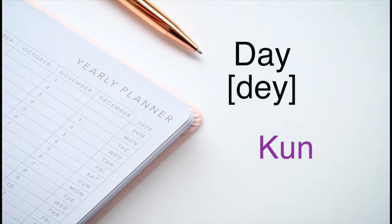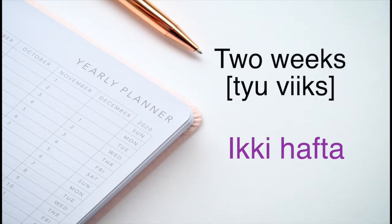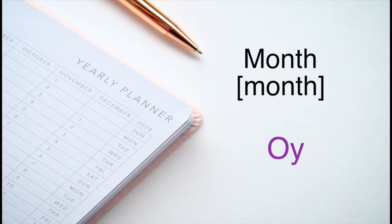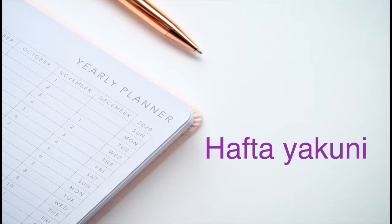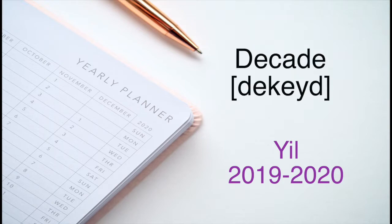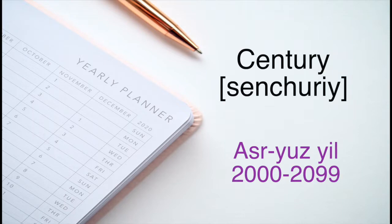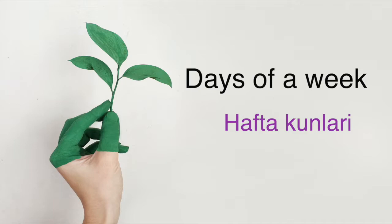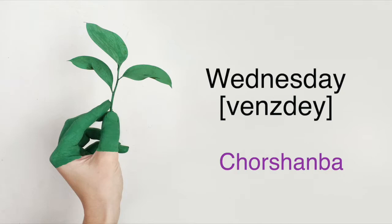Day, week, two weeks — or in British English, fortnight, which also means two weeks — month, weekend, year, decade, century, millennium.